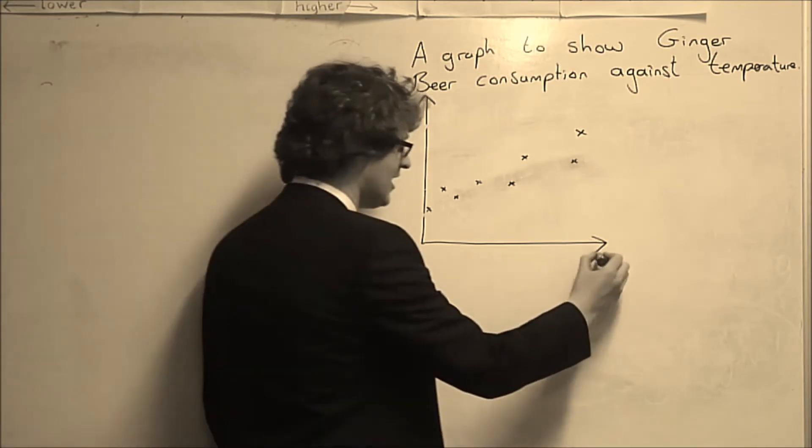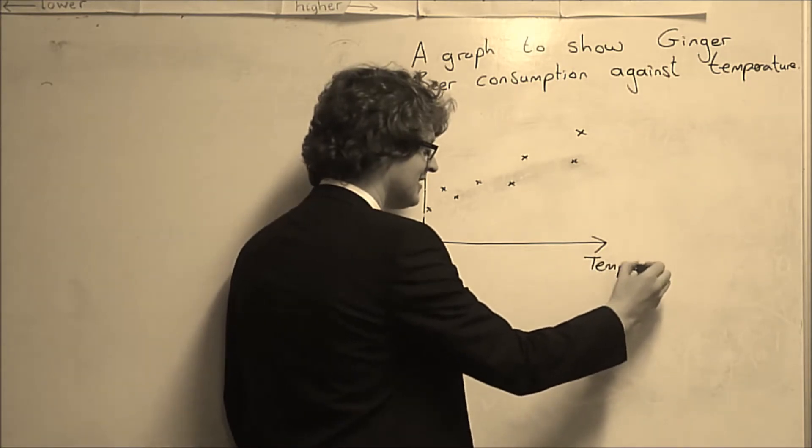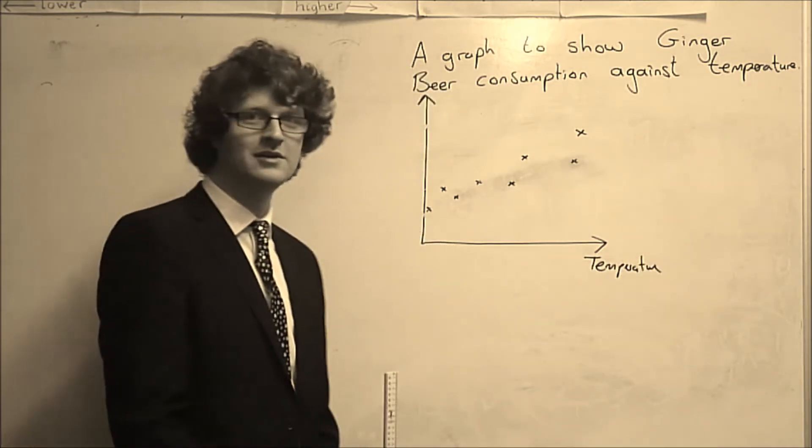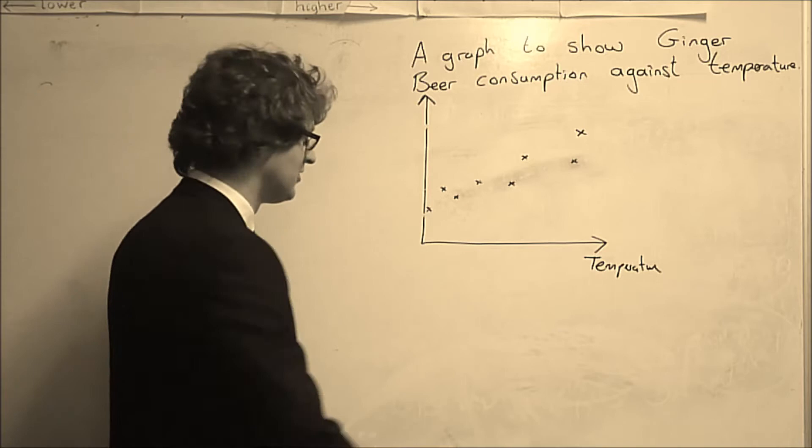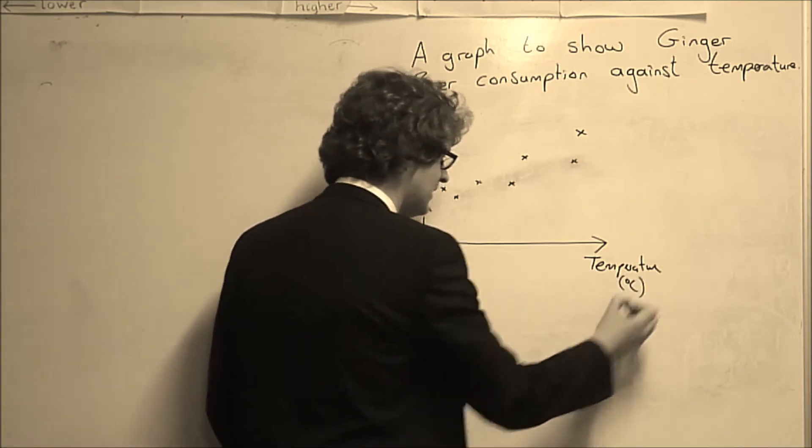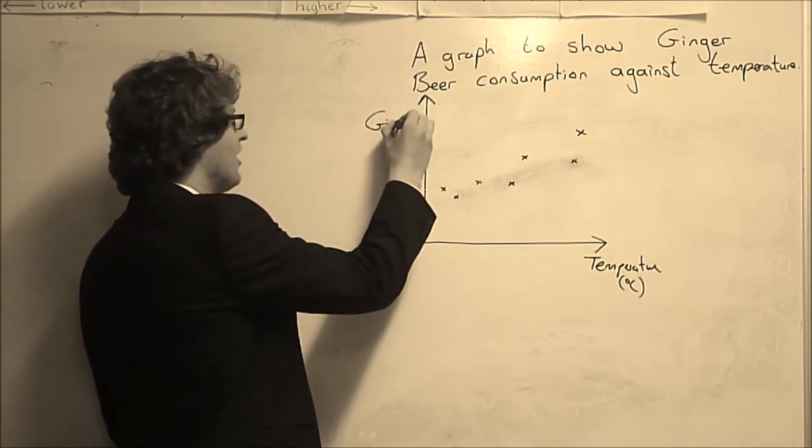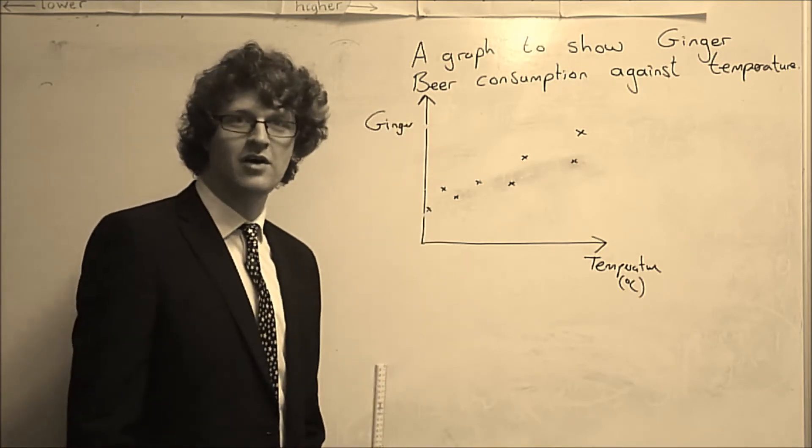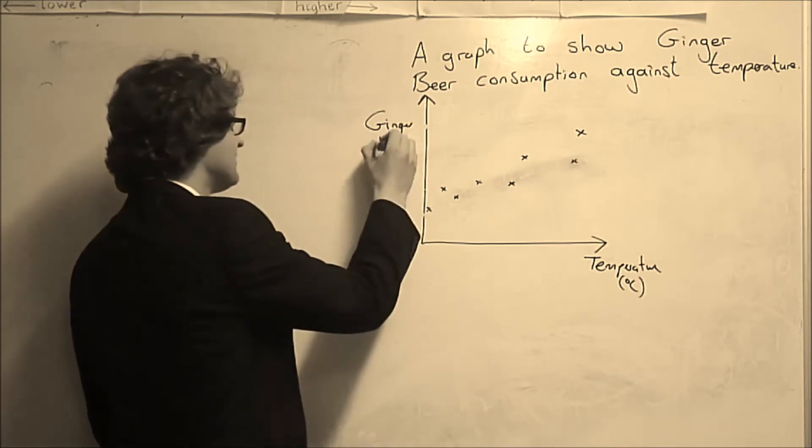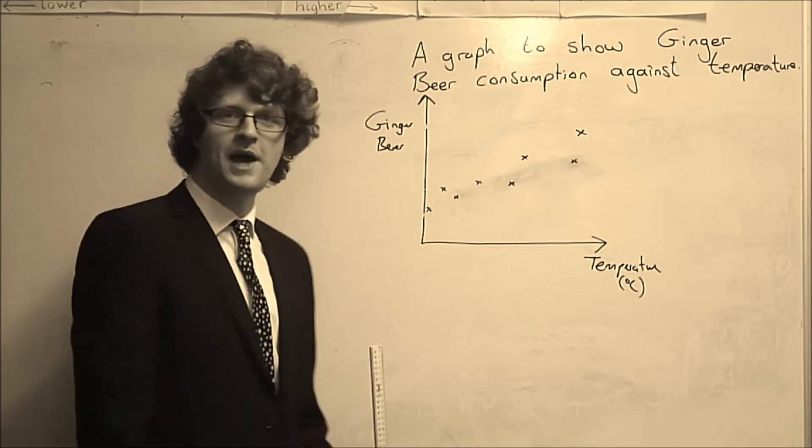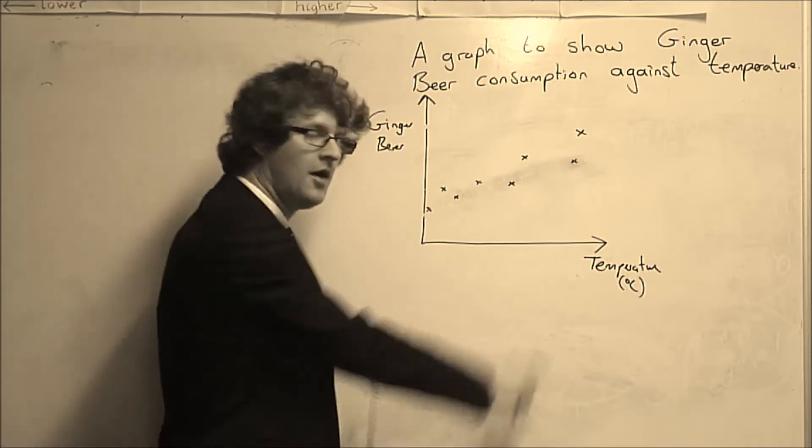Temperature will go along the horizontal axis, which is the independent variable, as it is completely independent of the other one. And ginger beer, on the y-axis or vertical axis, is the dependent variable, dependent upon temperature.